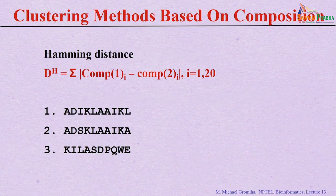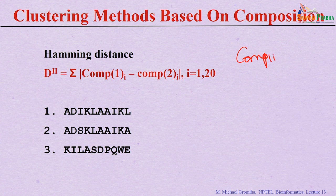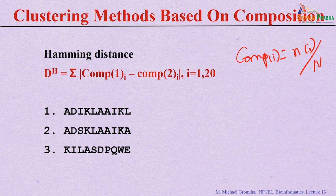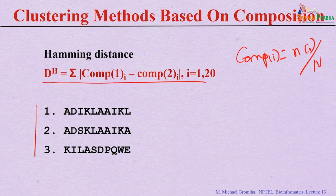For example, one example is Hamming distance. This is based on the amino acid composition. How do you calculate the composition? N of i divided by N, where N is the total number of residues in a sequence and N(i) is the count of any particular residue type among the 20 residues. The Hamming distance formula is the sum of the absolute difference of composition 1 of i minus composition 2 of i, where i varies from 1 to 20.